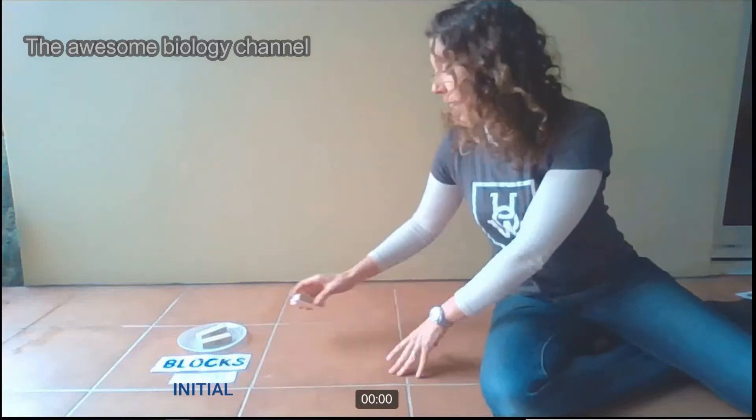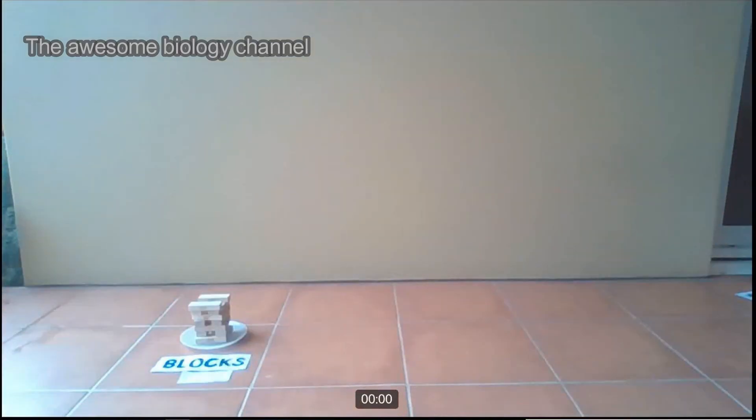But it's not just for a reactant being broken down that we use the delta. We also use it for when a product is being built up. And in this case, the final number of product, or here the number of blocks that we have, is going to be greater than the starting number of blocks. But we work it out the same way. The delta blocks is the number of final blocks that you had, minus the initial number of blocks that you started with.